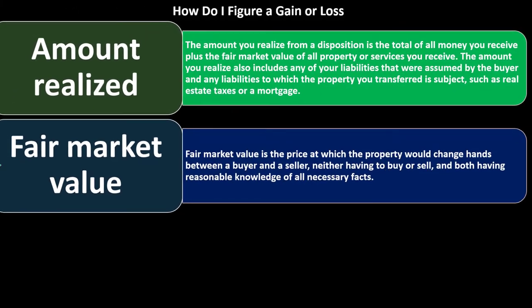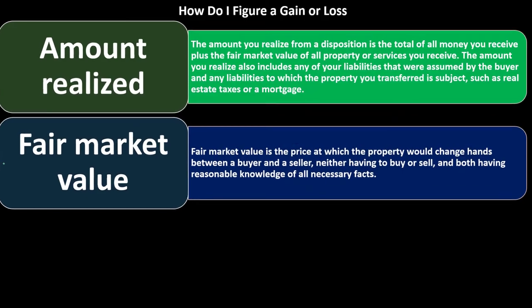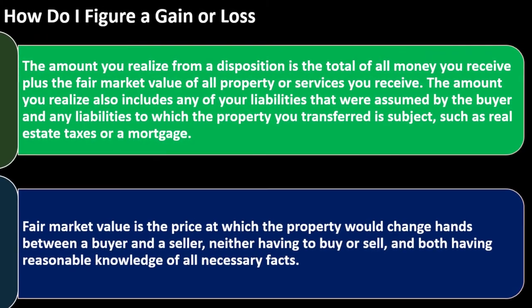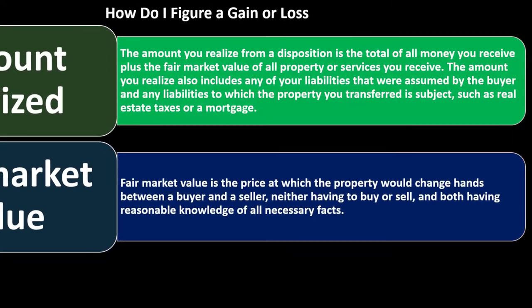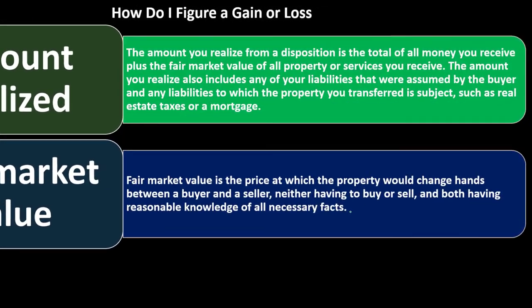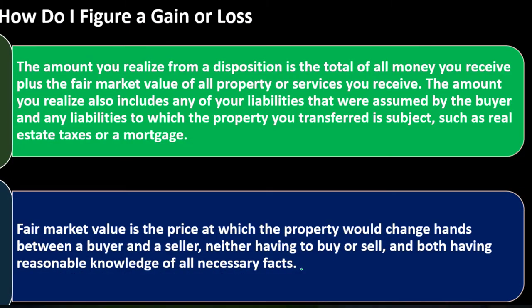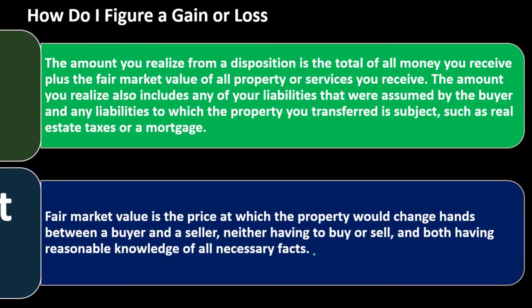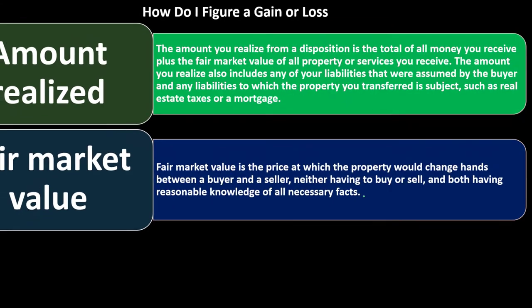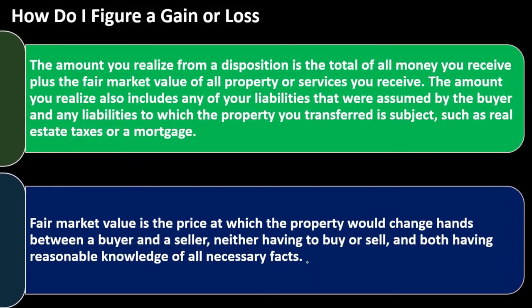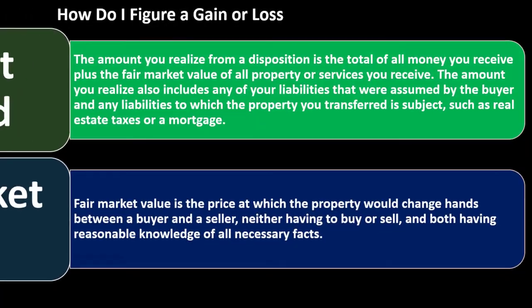Fair market value is the price at which property would change hands between a buyer and seller, neither having to buy or sell, and both having reasonable knowledge of all necessary facts. That definition makes sense in theory, but determining it in practice — especially for unique assets like a piece of real estate — is difficult. You may need to get an appraisal or some other estimate to justify your valuation.